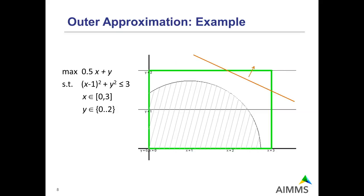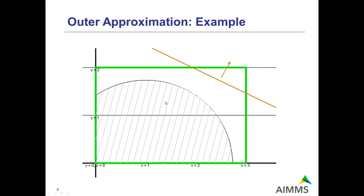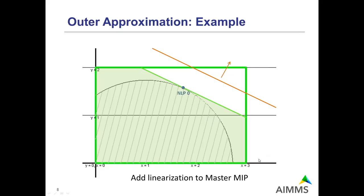Here is an example of how the outer approximation algorithm works. We have a small nonlinear problem with a linear objective and a quadratic constraint, where X is continuous and Y is integer. The gray region is the feasible region of the relaxation, and we optimize in the direction of the objective. In the first iteration, the NLP relaxation is solved giving an optimum. A linearization is added at that point to the master MIP, shown in green as the feasible region of the relaxed master MIP. The master MIP is solved and we find the optimal solution for Y=1.